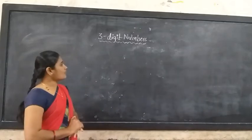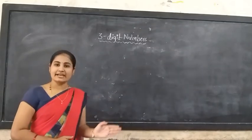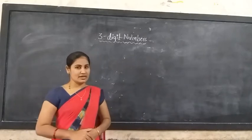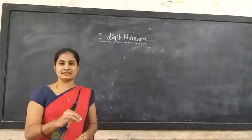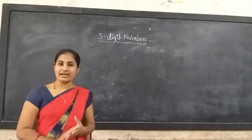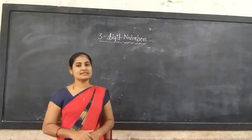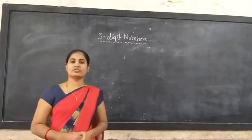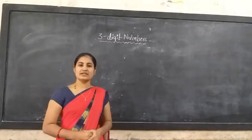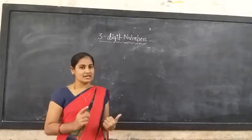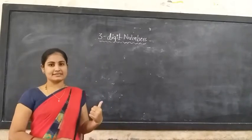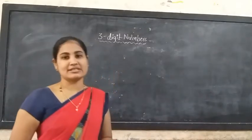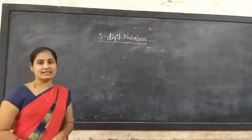Today we will discuss the formation of the greatest and smallest number by using given digits. I will give some digits, and using only those digits, we will find the greatest and smallest 3-digit number. I will show you an example to start the class.